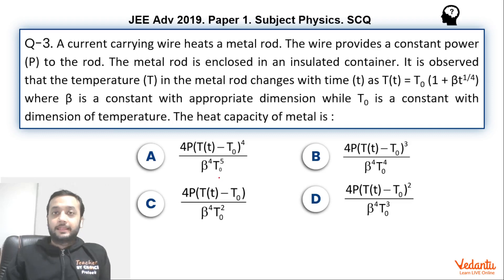Hi students, let's see this question that came in JEE Advanced Paper 1 Physics in the year 2019. A fairly simple question that came from the topic of heat transfer, and it was based on single choice correct question. I am sure most of the students would have collected a free easy three marks in this question.